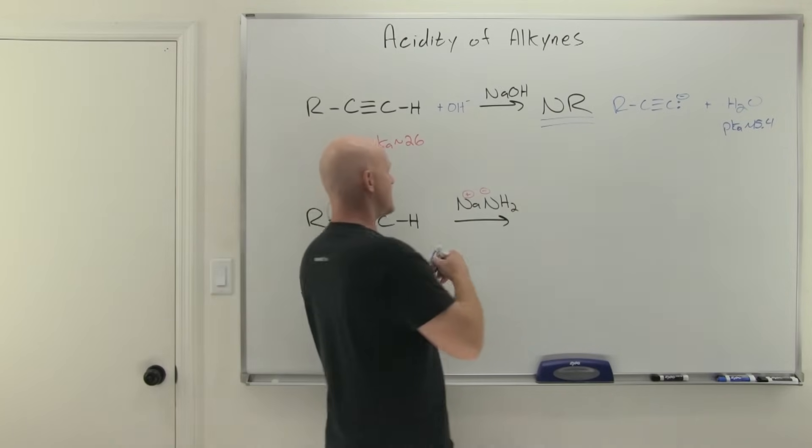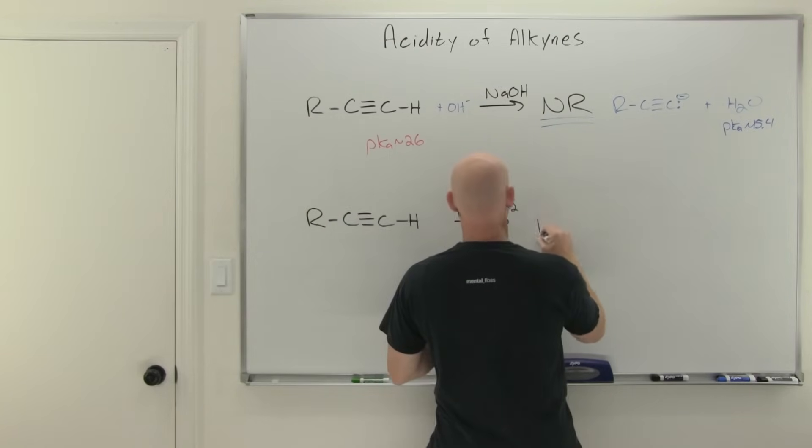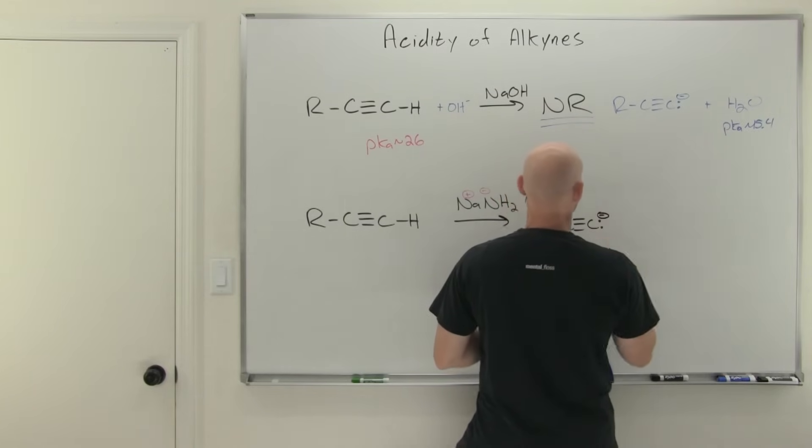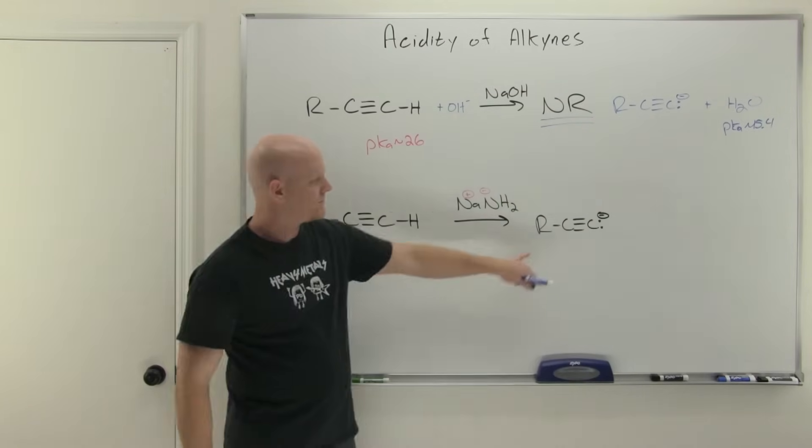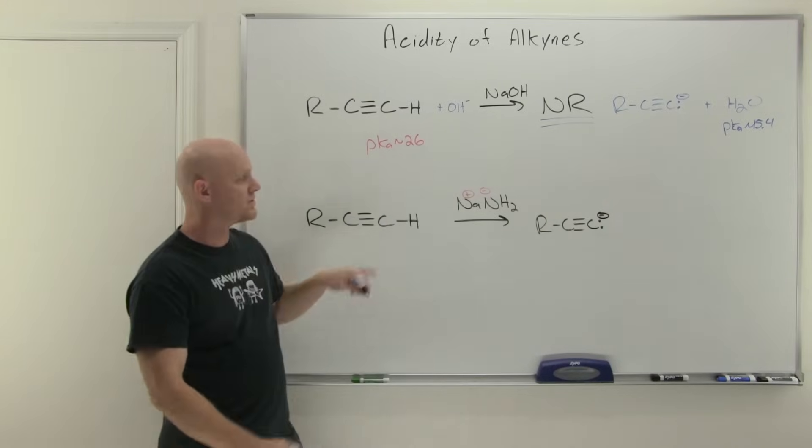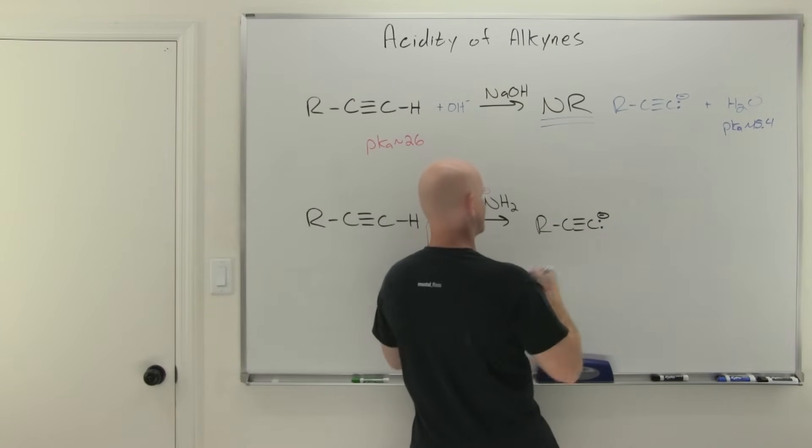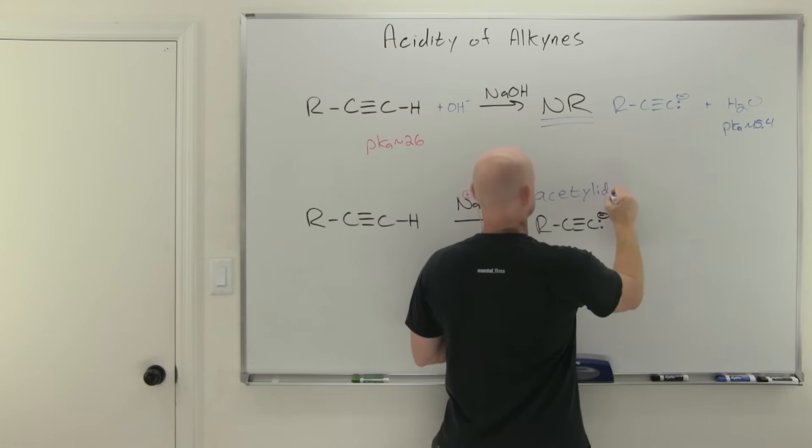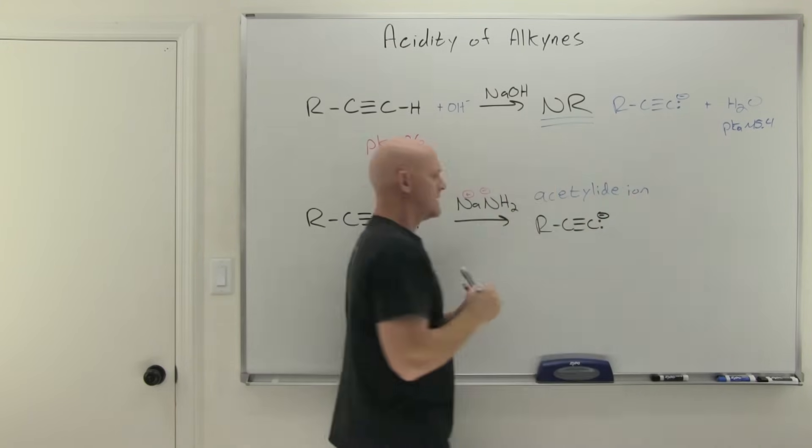And so if we look at this reaction we'll now effectively shift this equilibrium so far towards the products it turns out that this reaction effectively goes to completion. And we'll form this lovely conjugate base of our terminal alkyne. And he gets a name here. We call this an acetylide ion.